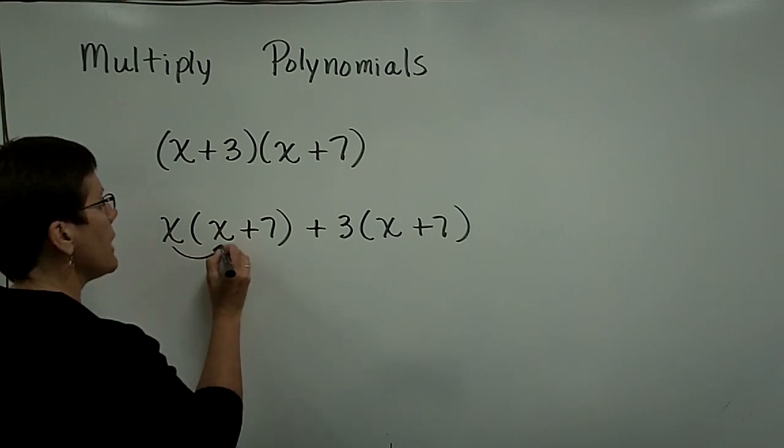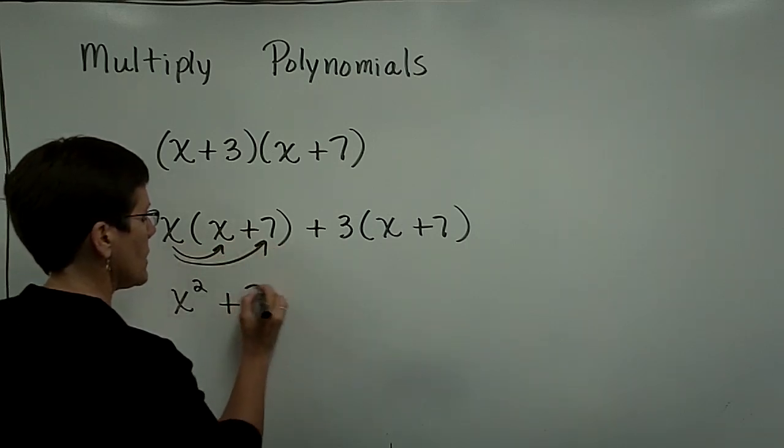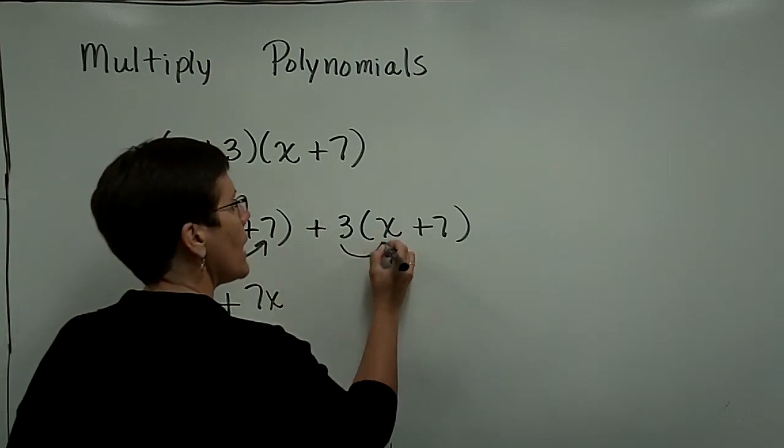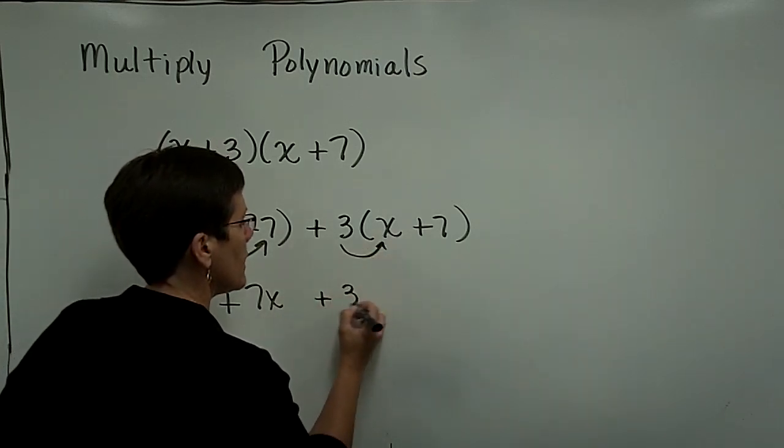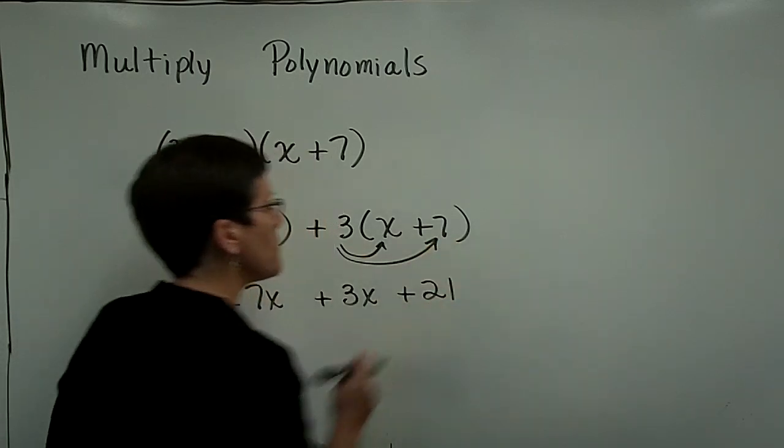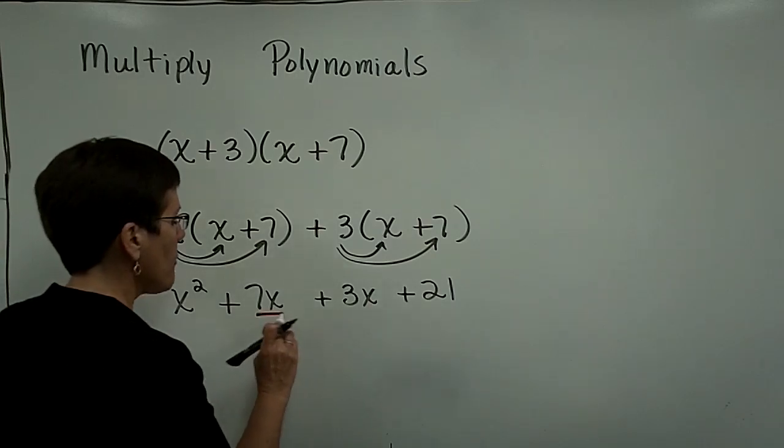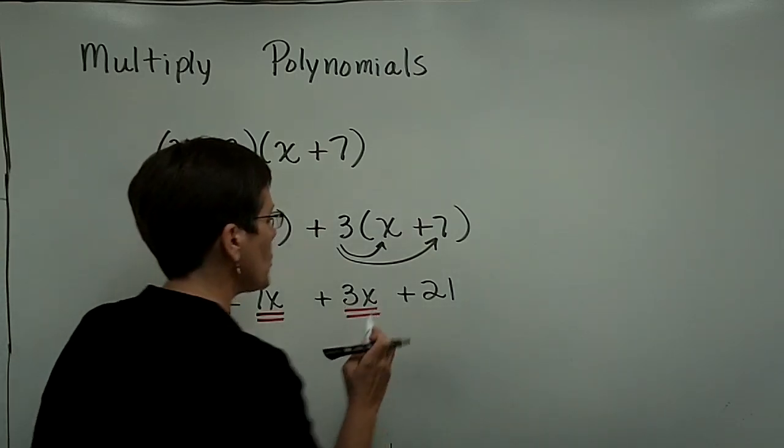And you would go ahead and have x times x is x squared, and x times 7 is 7x. Then here, a positive 3 times x is a positive 3x, and a positive 3 times a positive 7 is a positive 21. And finally, often it occurs, especially when multiplying two binomials together,